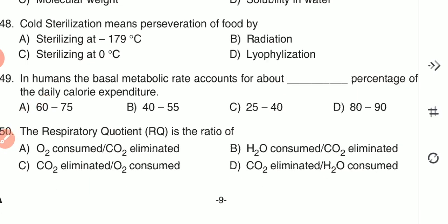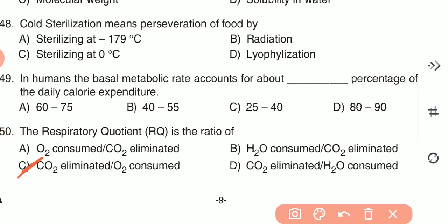Question 50: The respiratory quotient is the ratio of — (A) oxygen consumed and carbon dioxide eliminated, (B) water consumed or carbon dioxide eliminated, (C) carbon dioxide eliminated by oxygen consumed, or (D) carbon dioxide eliminated by water consumed. The answer is C — the respiratory quotient is carbon dioxide eliminated divided by oxygen consumed.